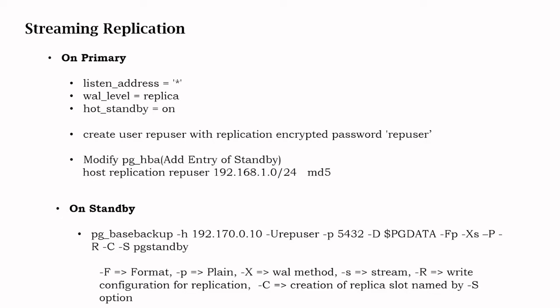On the standby server we have to use the pg_basebackup command. The primary host is my primary server, user is rep_user, port is 5432. The -d flag passes the data directory, which is the standard /var/lib/postgresql/data. The -F flag specifies plain text format, -X specifies the WAL method as stream, -P is for progress, and -C creates a replication slot to retain WAL files so they are not deleted if the standby is offline or unavailable.